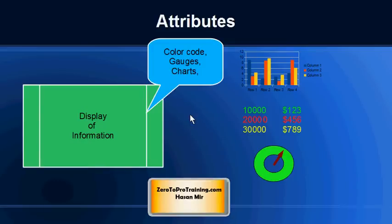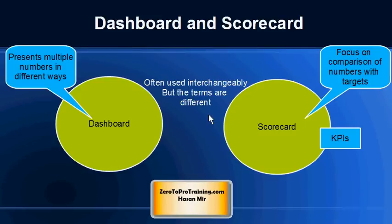The information is displayed usually in different color codes. Different gauges are available on the screen representing the performance, and the trend is displayed in terms of charts. This is pretty common for both dashboards and scorecards.